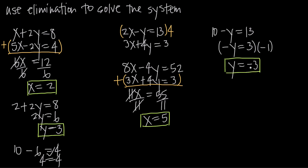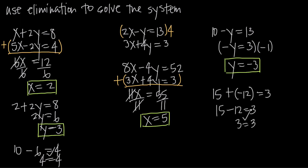Now we double check by plugging both values into the second equation. We have 3 times x, and x is 5, so 3 times 5 is 15. Plus 4 times y, and y is negative 3, so 4 times negative 3 is negative 12. So 15 minus 12 equals 3, giving us 3 equals 3 — that checks out. The solution x equals 5 and y equals negative 3, or (5, −3), is a solution to this system of linear equations. That's how you use elimination to solve a system of linear equations.